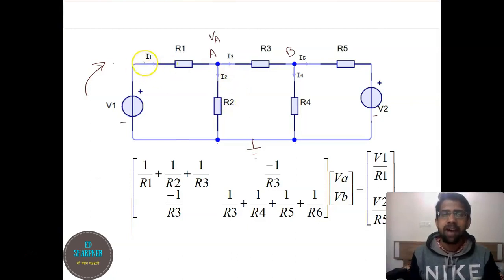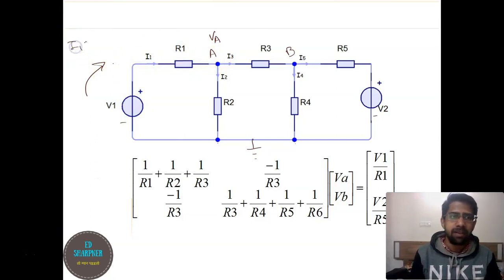So when we have I1 in our equation, we will represent I1 as V1 minus VA divided by R1. So whenever we come across I1 we will write V1 minus VA upon R1.